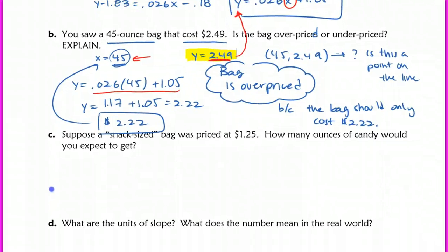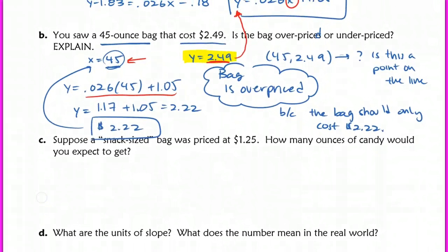Alright, so Part C says, suppose you buy a snack-sized bag priced at $1.25. How many ounces of candy would you expect to get? So in this case, I am given in the problem. They're not explicitly telling me that y equals $1.25, but I need to make sure that I understand that this is a price, so I can automatically say y equals $1.25. So nowhere in the problem do they just come out and say, hey, y equals $1.25. You have to kind of figure that out for yourself. So in this case, we're going to do exactly what I just talked about in Part B. We're going to plug in for the y and then solve for the x. So we're trying to figure out how many ounces of candy, so that means x is something that we're looking for.